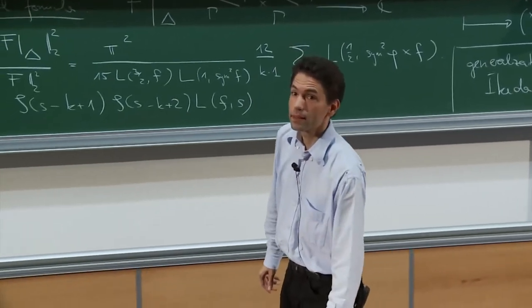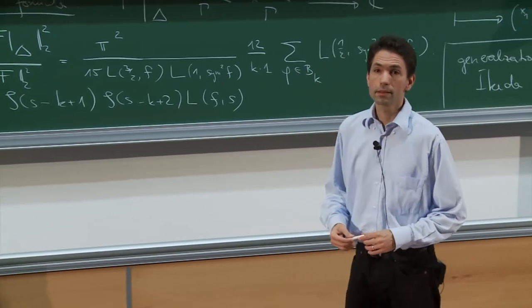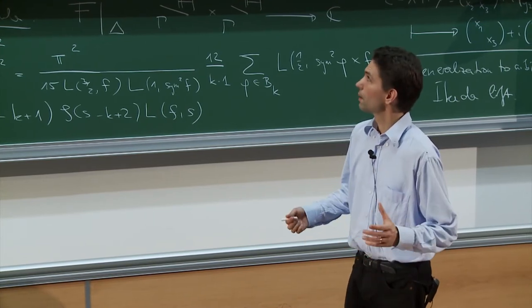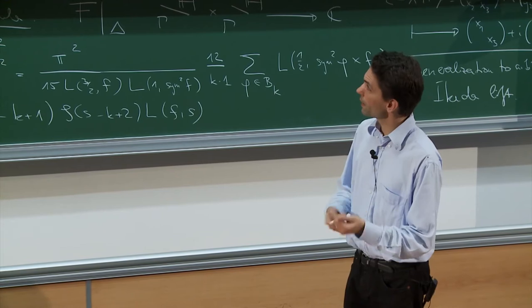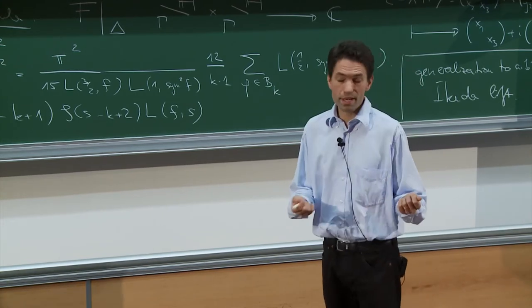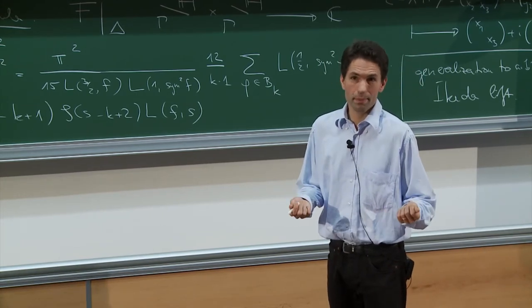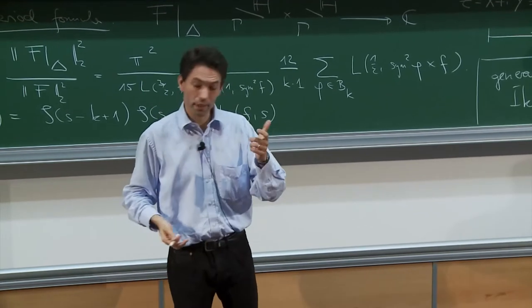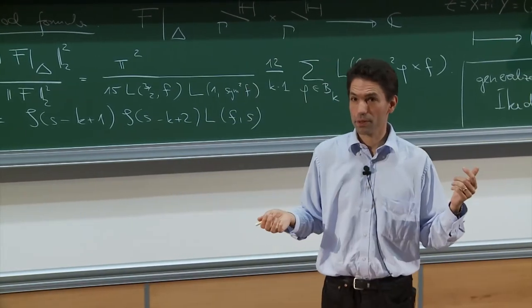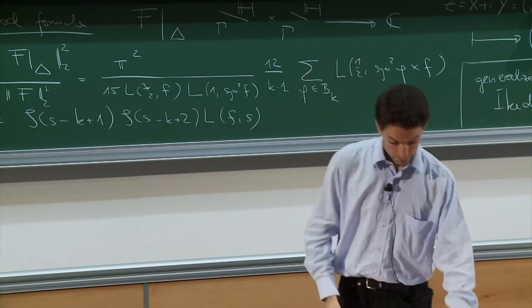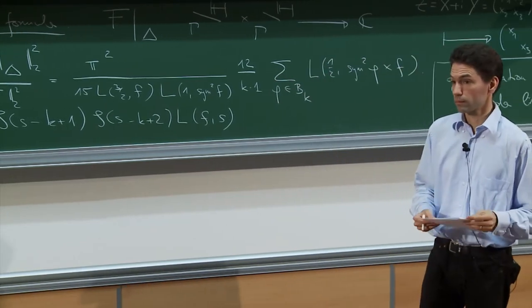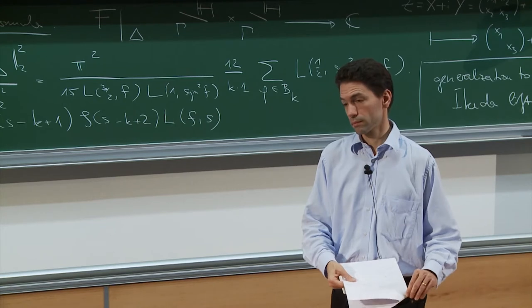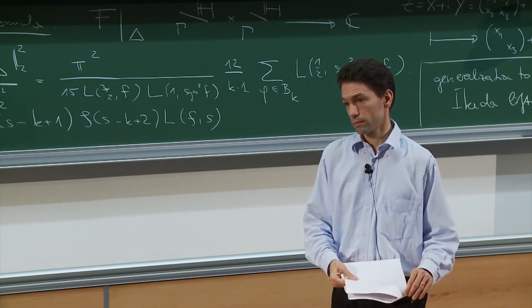Regarding these two L-functions and how to think about the Satake parameters: they are defined by Euler products, and the Euler factor is a certain combination of the Satake parameters, which you can form in different ways. At least for Sp(4), there are two fundamental representations of Sp(4), and these are the Langlands L-functions attached to those two fundamental representations.